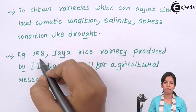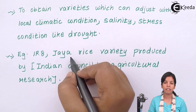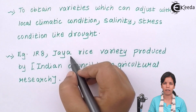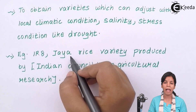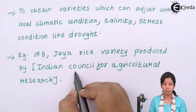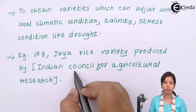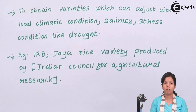Examples of plants produced through plant breeding are IRA, a rice variety, and Jaya rice, commonly found in Odisha and Karnataka, which has greater amounts of vitamins and nutritional content compared to other varieties and can grow in any part of India. These varieties were produced by the Indian Council of Agricultural Research (ICAR). Under ICAR, various wheat, rice, and fruit varieties have been produced through plant breeding. I hope you all have understood what plant breeding is and how it helps crops grow in a better variety and in a better way.